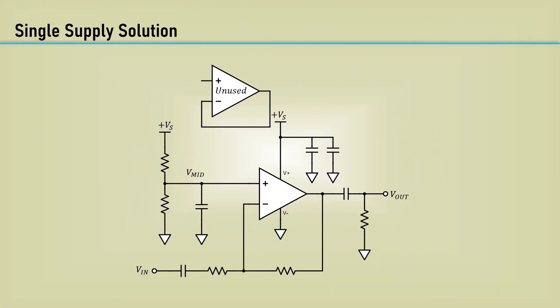Recall from the video on single supply biasing, we had to artificially create a mid-voltage anyway. That mid-supply can simply be connected to the non-inverting input of the unused op-amp configured as a unity gain follower.